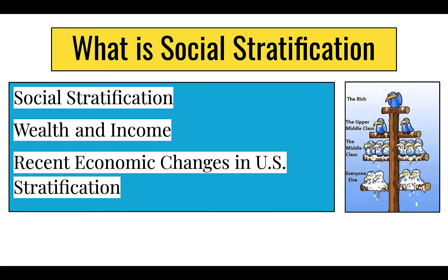Looking at the distribution of wealth in the United States, income is unequally distributed — the highest-earning one-fifth of the population receives about 50% of all income, more than 13 times the 3.7% earned by the bottom one-fifth. But wealth is distributed even more unequally: the richest 20% of families control nearly 90% of all privately owned wealth, while the poorest 20% have no wealth at all and are actually in significant debt.